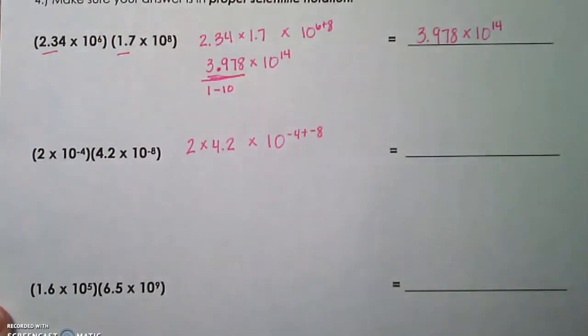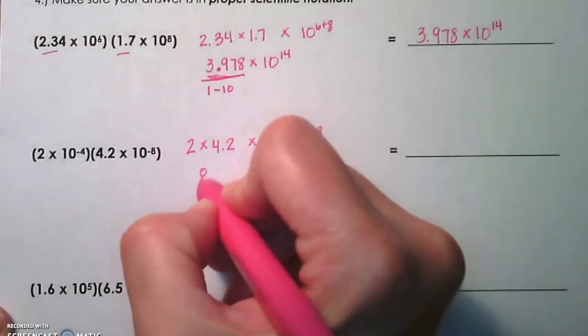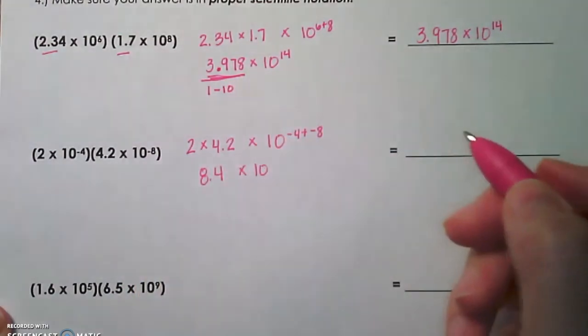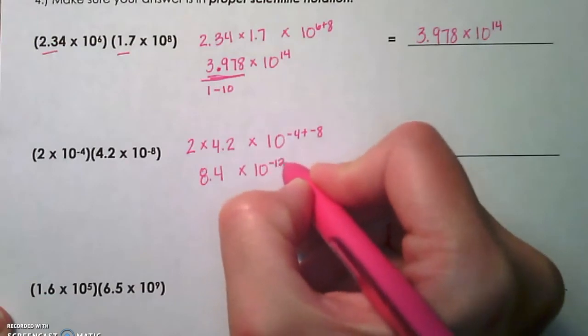When we multiply 2 times 4.2, you should get 8.4. You're going to keep your 10, and you're going to add negative 4 and negative 8 to give you negative 12.